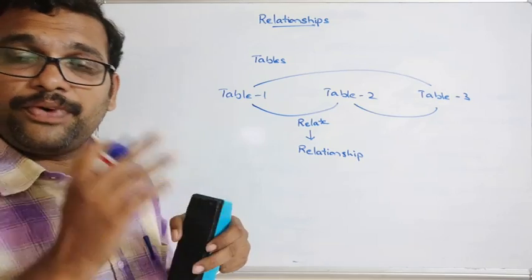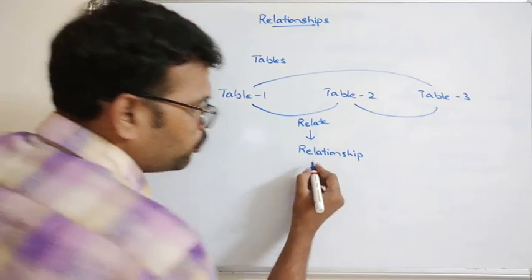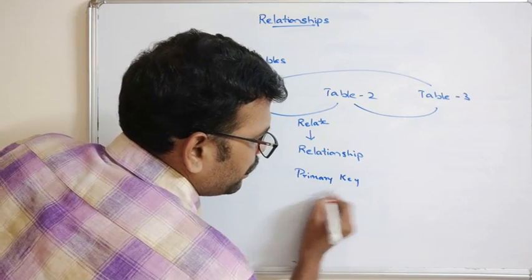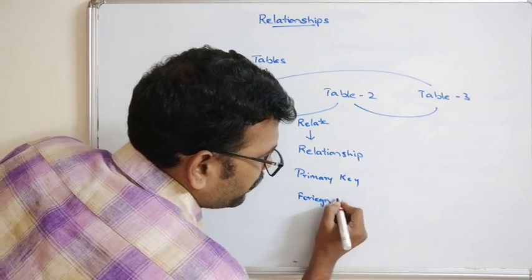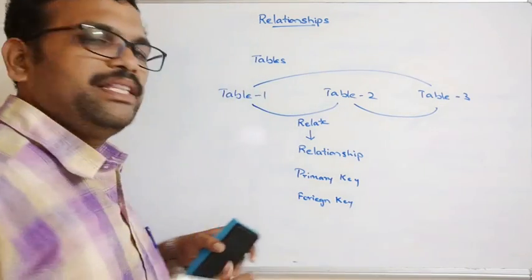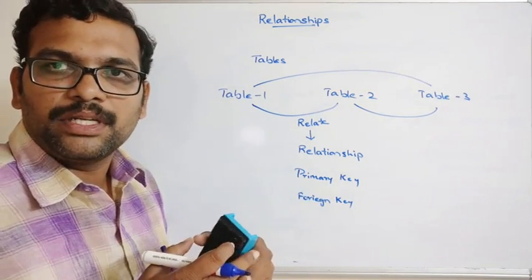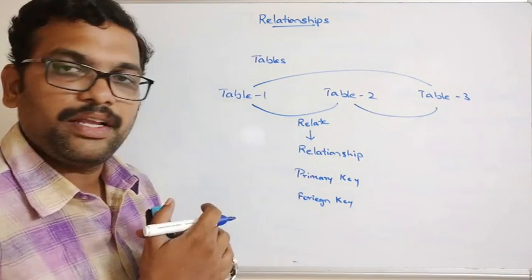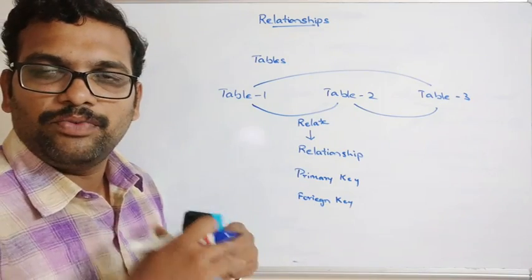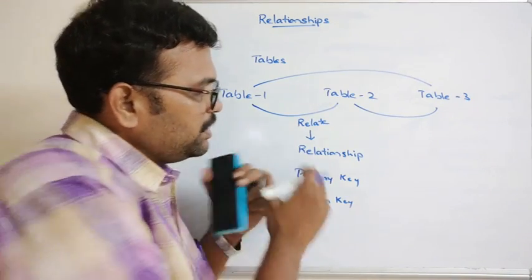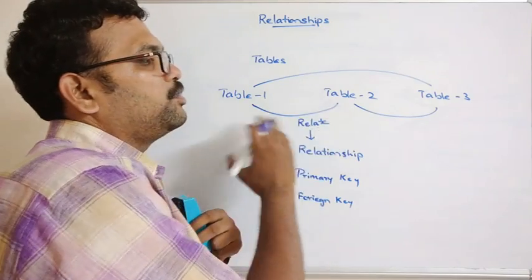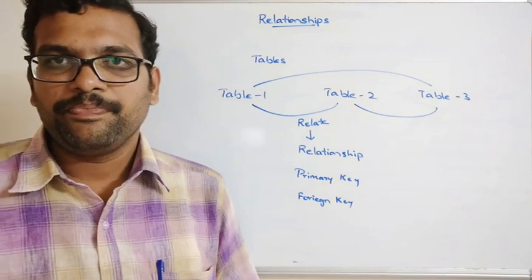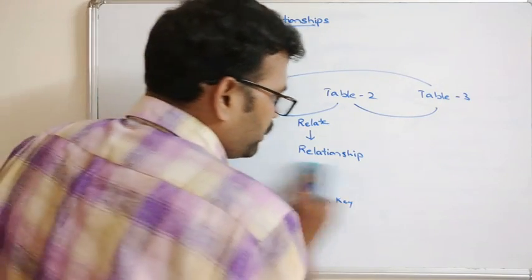That relation is called a relationship. By using this relationship, one table's data will be related to the data available in another table. For this purpose we use two different keys: primary key and foreign key. By using these two keys we relate different tables. We'll see the different types of keys in the next session.